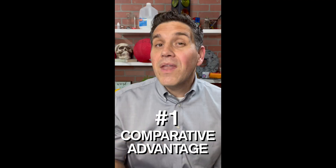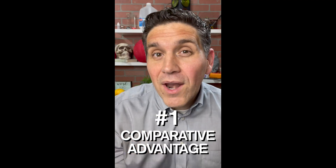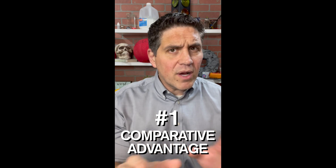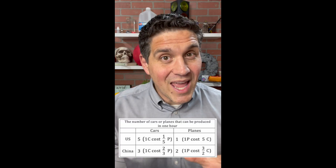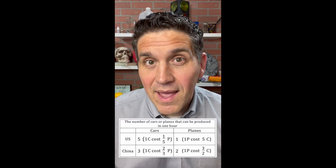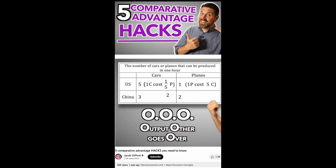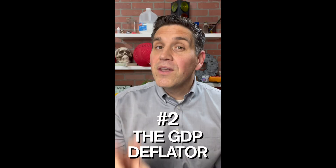Three of the hardest concepts you're going to learn in macroeconomics. Number one is comparative advantage, specifically determining how countries should trade and their terms of trade. The trick is to set up the question the same every single time. So if a question gives you numbers in a sentence, convert it over to a chart and then use the same procedure that you see in my study guides and in my videos.